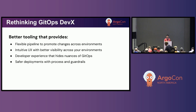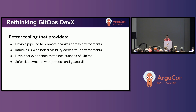So we set out to build a tool that approaches the challenges of GitOps and CD holistically. We wanted the solution to provide a flexible pipeline to define how changes are promoted between different environments. We wanted an intuitive UI that gives a better understanding about what was, needs to be, or is about to be promoted. We wanted to hide the GitOps nuances from developers who, frankly, don't really care about GitOps. And we wanted to provide guardrails ensuring that promotions are happening within defined processes.